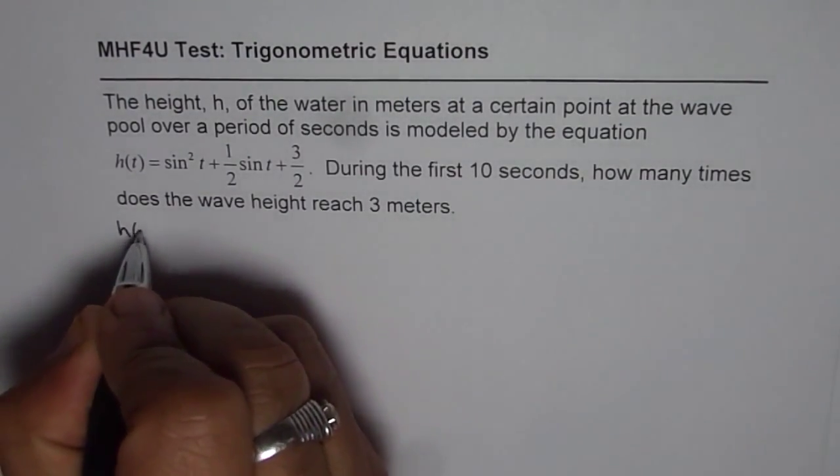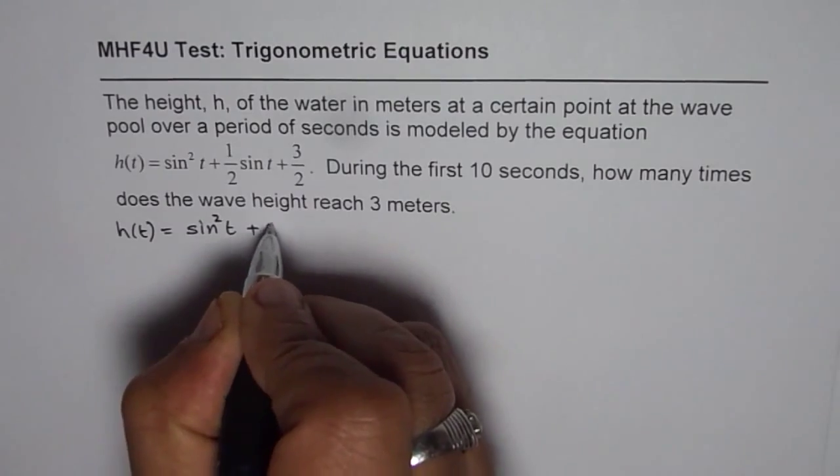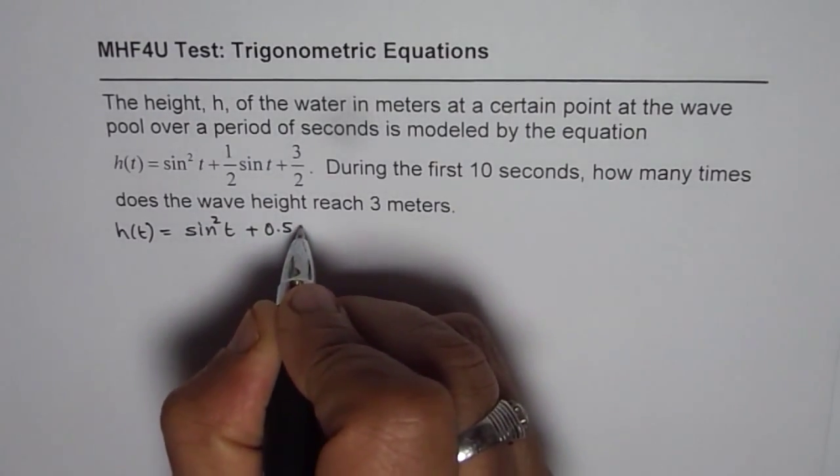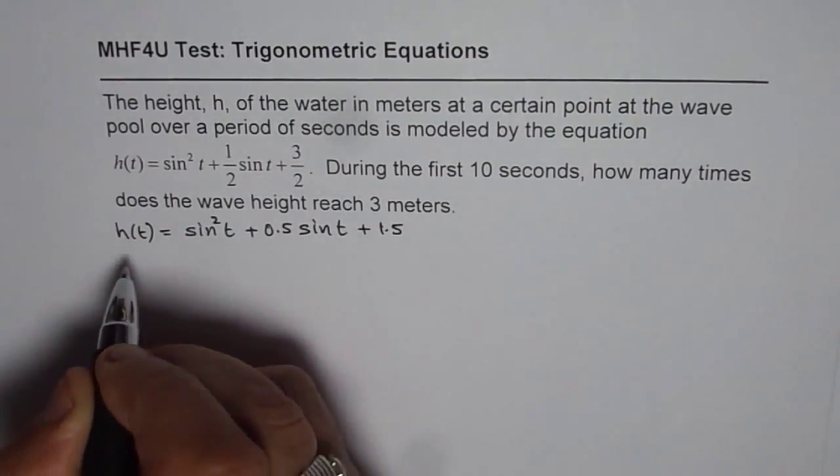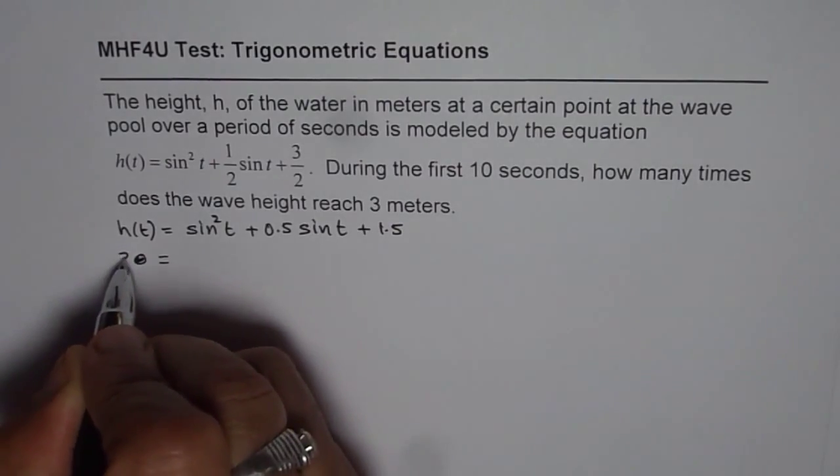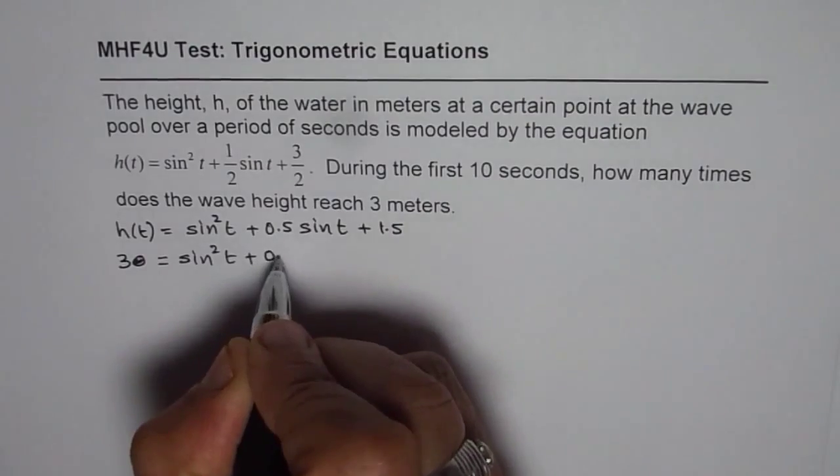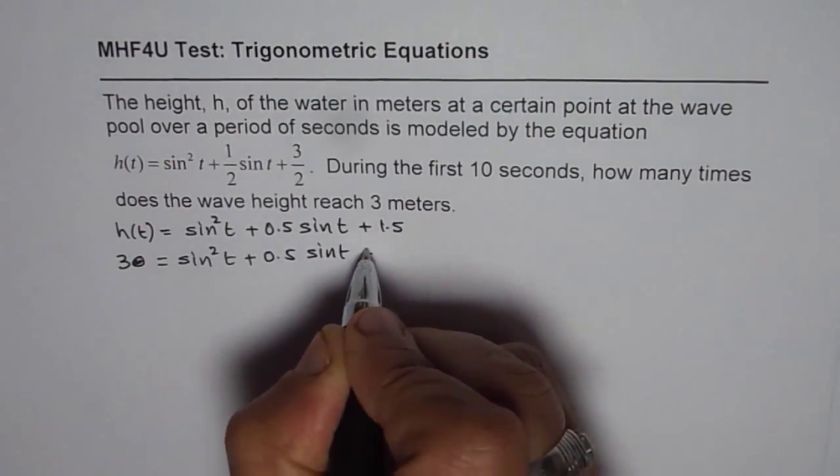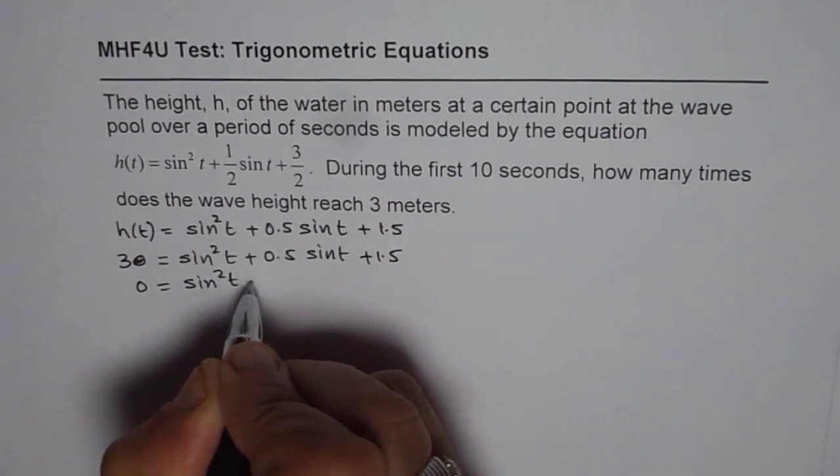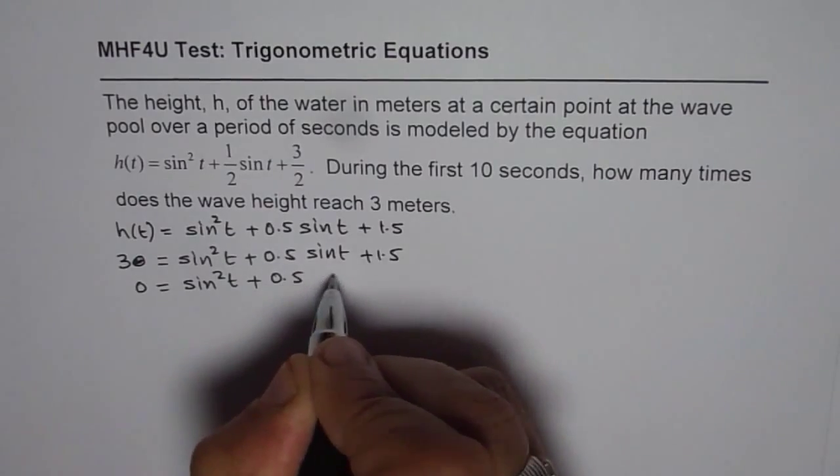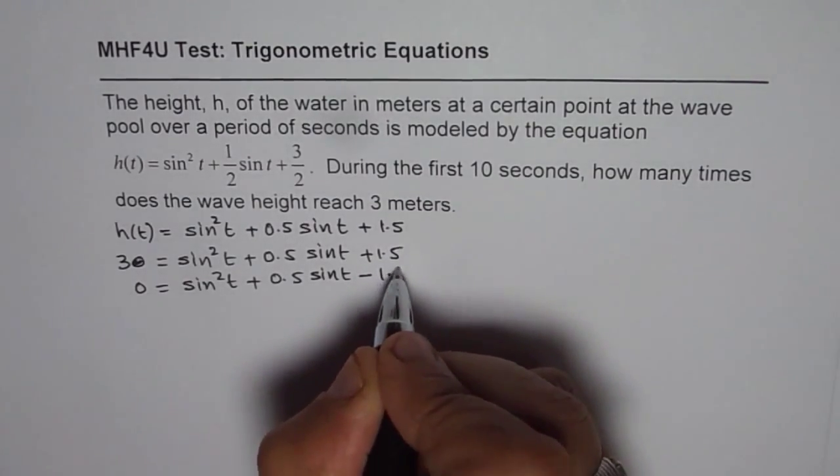So the equation given to us is h of t equals sin square t plus 0.5, I am writing for half, sin t plus 1.5. Now 3 meters, so we will write 3 for h of t, equals to sin square t plus 0.5 sin t plus 1.5. Now we can take it to the right side and rearrange. We get sin square t plus 0.5 sin t, 1.5 minus 3 will give us minus 1.5.